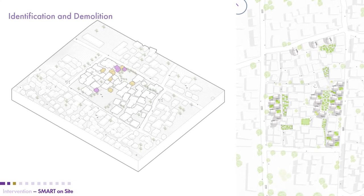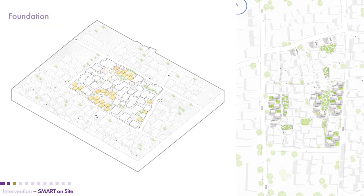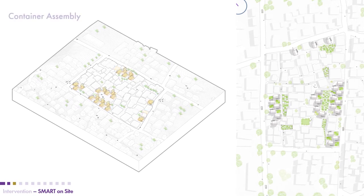For implementation, the process would involve first identifying houses that could be demolished, then creating foundation parts that would house the later-to-come containers, which would start up the whole community of new smart houses.